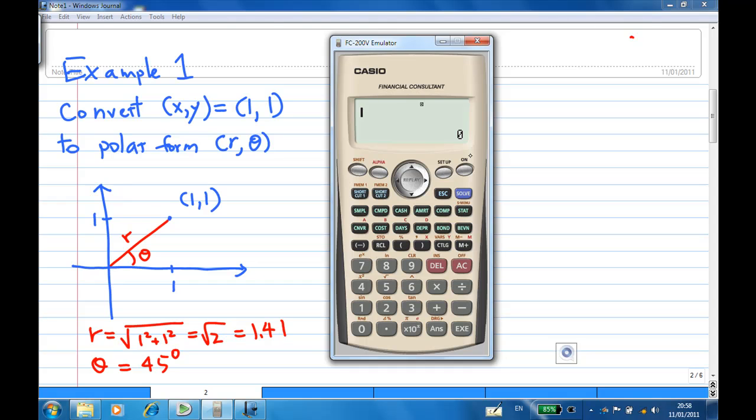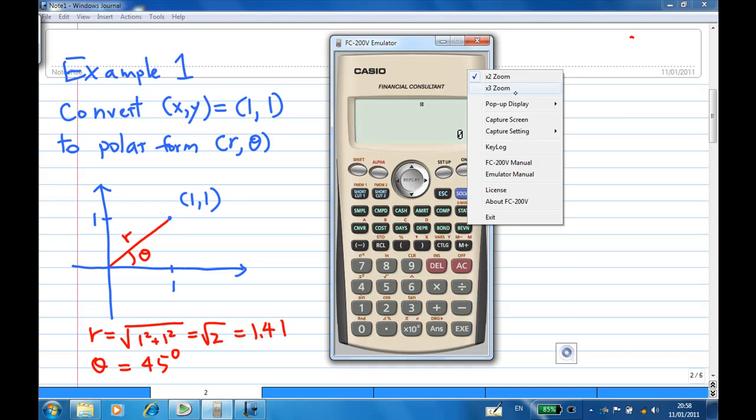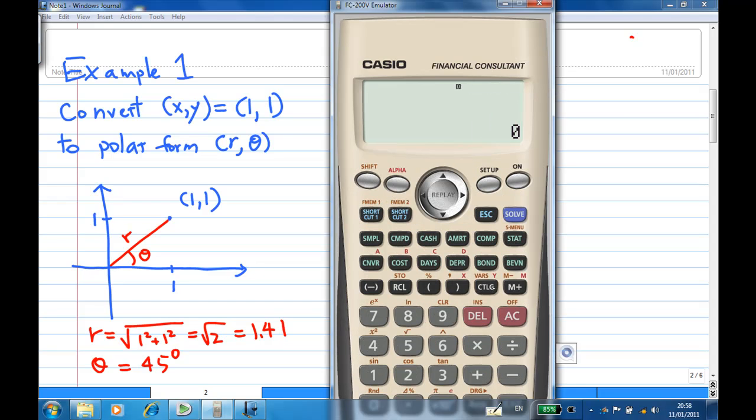Now, I want to convert the rectangular form to polar form. For this particular calculator, I'm going to use the catalog function. I'm going to press catalog. For this catalog, I'm going to move all the way down to select the function called Polar Form, POL. Select, enter.